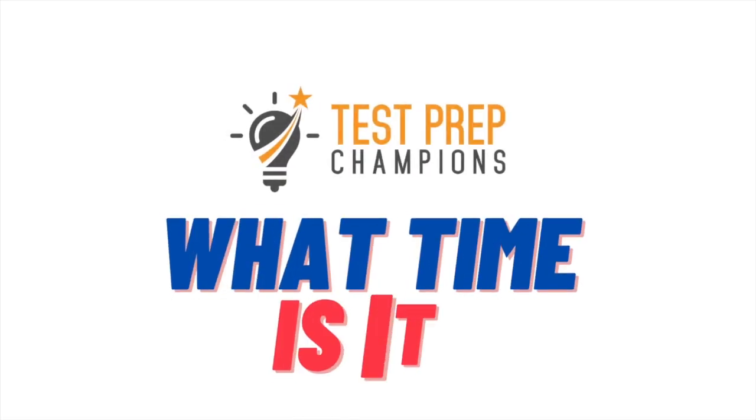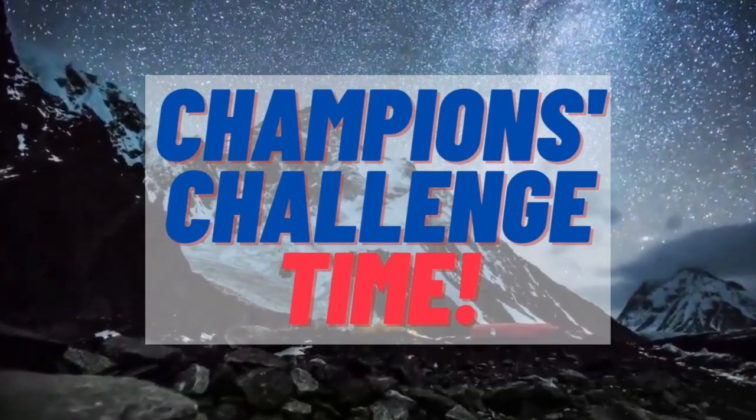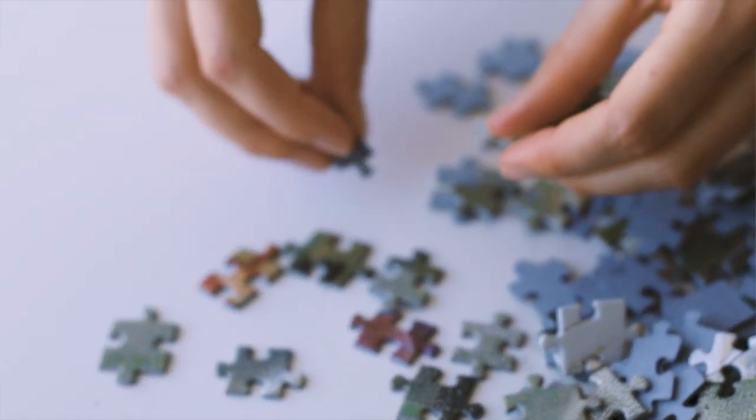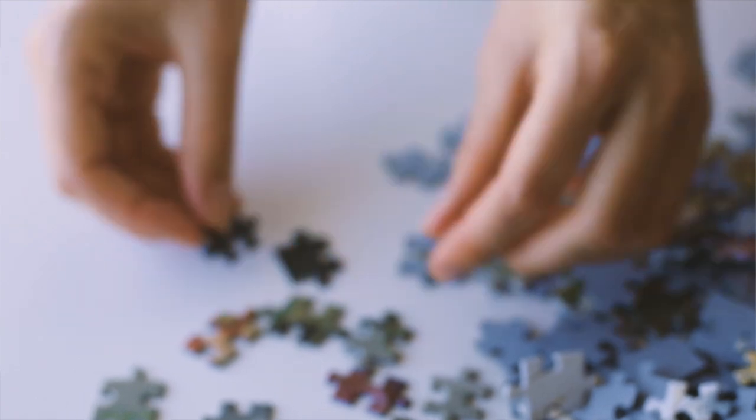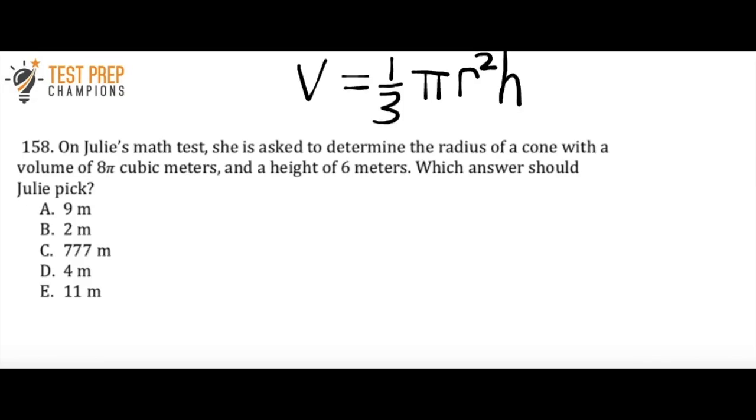We'll move on to the next question. This next question is the hardest question in the video, in my opinion. You can let me know down below if you think that there was a harder question or if you think this was the hardest. I'll let you try it now. On Julie's math test, she is asked to determine the radius of a cone with a volume of 8π cubic meters and a height of 6 meters. Which answer should Julie pick? Now, just to save you some time since we're just practicing for right now, I've given you the formula for the volume here of a cone. And it's V equals one-third pi r squared h. And just keep in mind that on the test, if you get a question like this, you'll want to go to that math formula sheet and find this formula. I'm just giving it to you just to save time since we're only practicing.